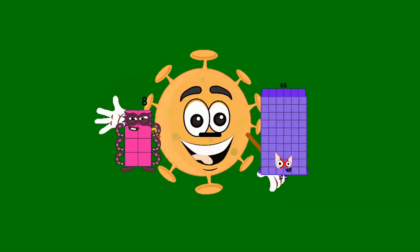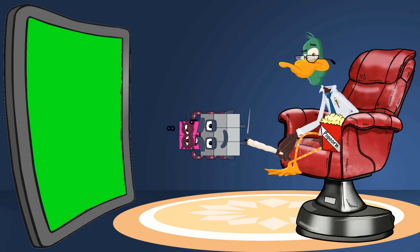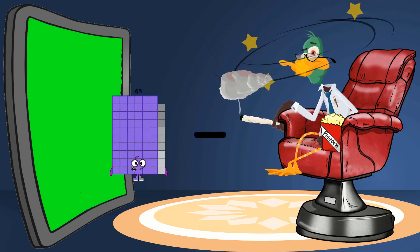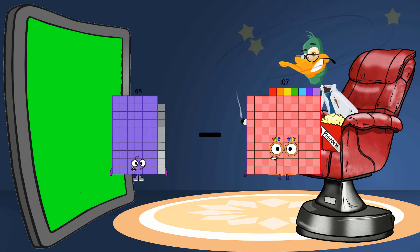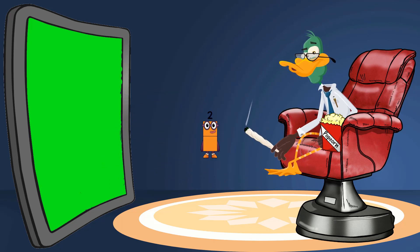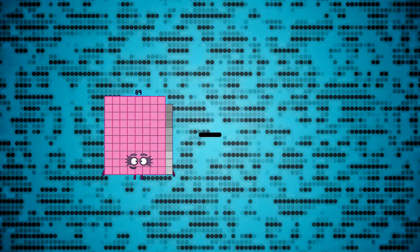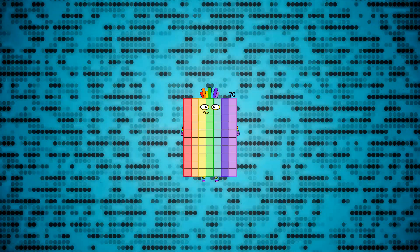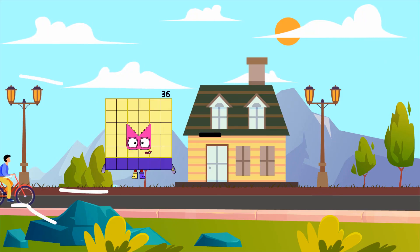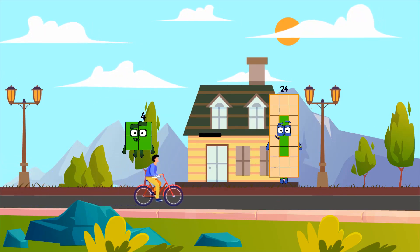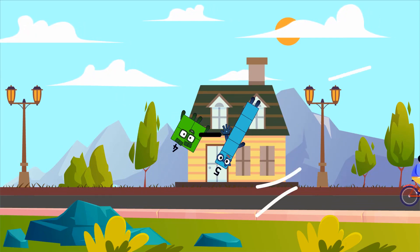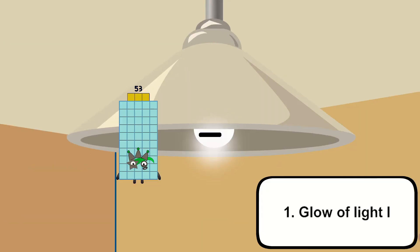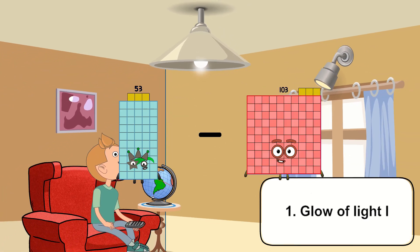8 minus 9 equals... 69 minus 67 equals 2. 73 minus 3 equals 70. 53 minus 54.